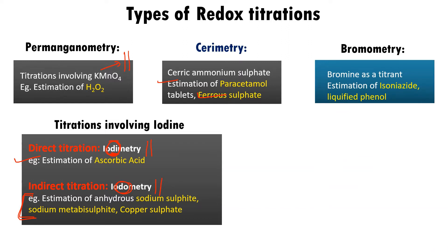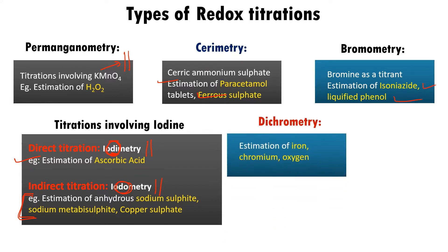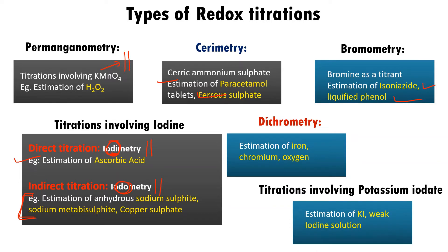We have bromometry where bromine is used as a titrant for estimation of isoniazid and liquefied phenol. Then we have dichrometry which is used for estimation of iron, chromium, and oxygen. We also have titrations involving potassium iodate (KIO3) in the burette, used for estimation of potassium iodide (KI) and weak iodine solutions.